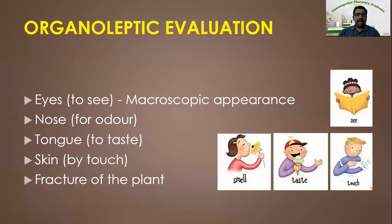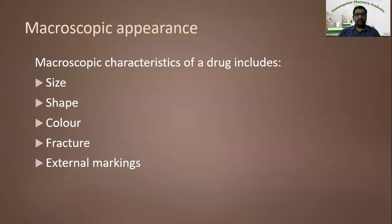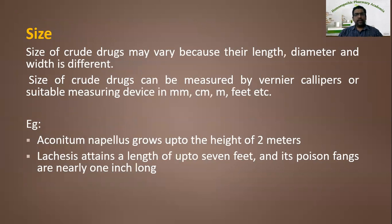Let us see the macroscopic appearance — how the quality or purity of the drug is assessed with the help of eyes. The macroscopic characteristics of a drug include size, shape, color, fracture, and external markings. The size of a crude drug may vary because of different length, diameter, and width. The size can be measured by a scale or vernier calipers in terms of millimeter, centimeter, meter, feet, etc.